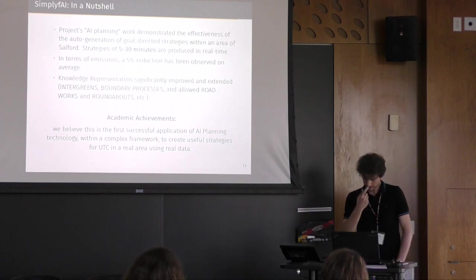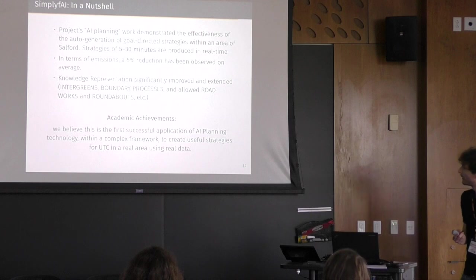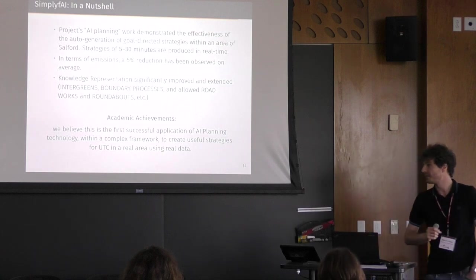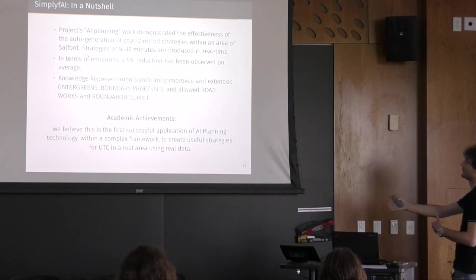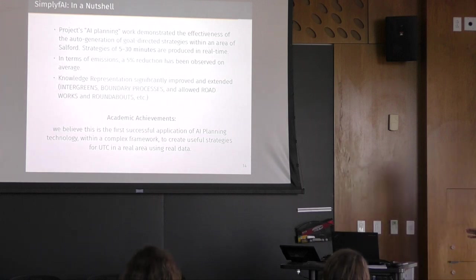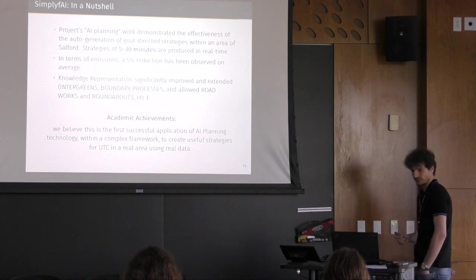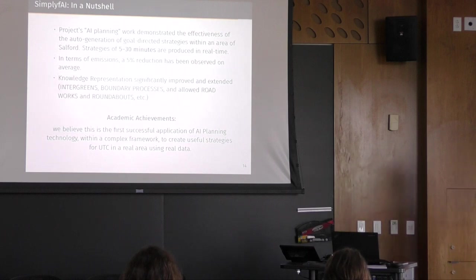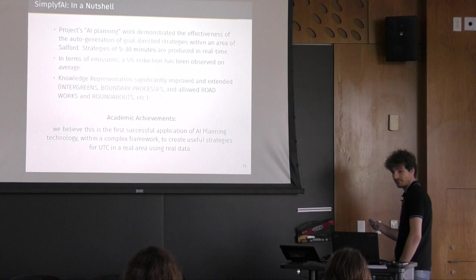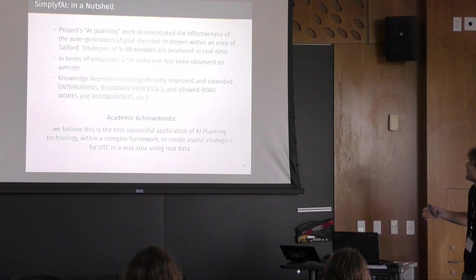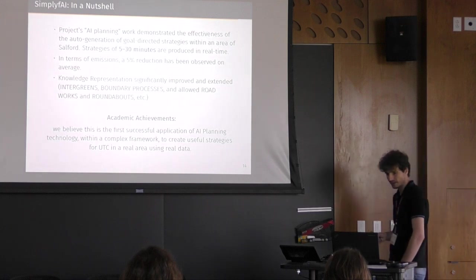And so summarizing. The work demonstrates the possibility and the capabilities of planning to generate strategies, goal-oriented strategies within a large urban area. Strategies work for five to 30 minutes ahead and are generated in two to 30 seconds, which means also almost real time for them. And in terms of emissions, in general, we observe a 50% reduction, even though we didn't explicitly model emissions in our domain model. And as a byproduct, basically, the knowledge representation has been significantly improved. So now it can deal with inter-greens, boundary process, roadworks, roundabouts, and a number of other interesting features.